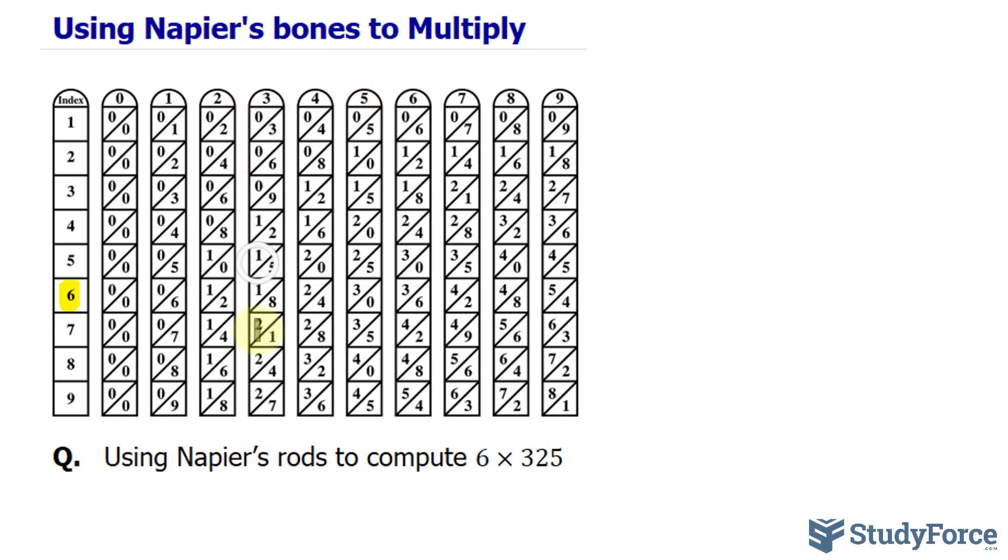Now, as you go down each of these bones, you'll notice that we have multiples of that number. For example, here we have 3, and the multiples of 3 are 3, 6, 9, 12, 15, and so on. So let me highlight specifically at the index 6 for each of these bones.